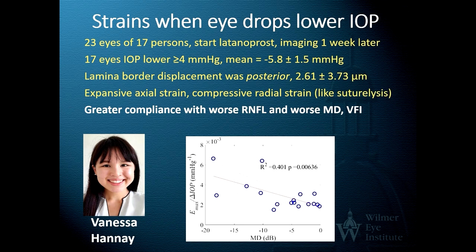To make this a more practical clinical method, we've begun measuring the difference in eye pressure and strains generated when patients either start a new eye drop such as latanoprost or stop taking latanoprost and pressure rises. When pressure was lowered, there was expansive axial strain — the lamina got taller — and compressive radial strain — it got narrower — just like the suture lysis data. In addition, there was greater compliance with worse nerve fiber layer or worse visual field indices; in other words, the worse the glaucoma, the greater the strain.